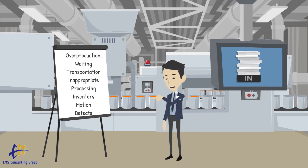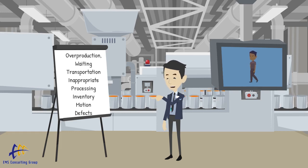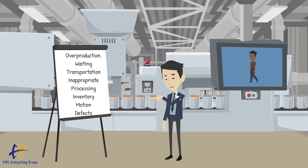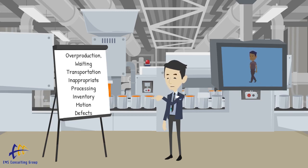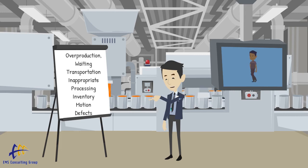Next, we have the waste of motion. This is a simple people waste. Often, we observe people walking around the office or factory looking for tools, materials, or information. Our layout might be such that a lot of motion is required, but motion adds no value.